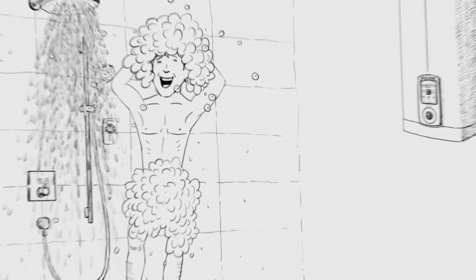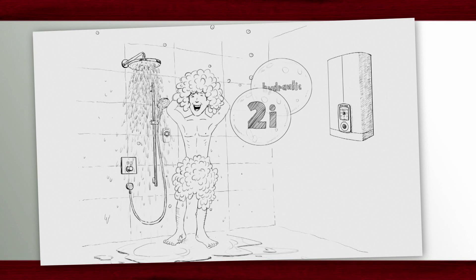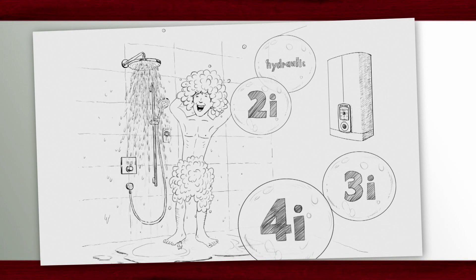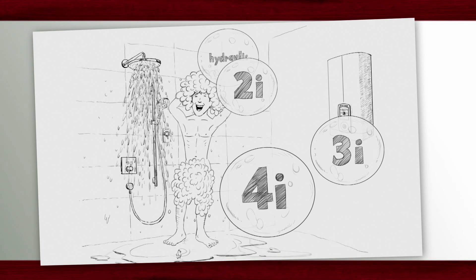To guide you through our wide product range, we have divided our hot water solutions into four comfort levels: Hydraulic, 2i, 3i, and 4i. Basically, the higher the number before the i, the more stable the outlet water temperature.